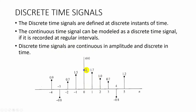That is, the amplitude can vary as 1.7, 1.2, and so on, but we are measuring the amplitude only at time periods 0, 1, 2, 3, 4, etc.